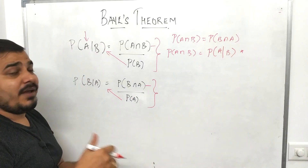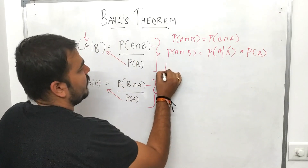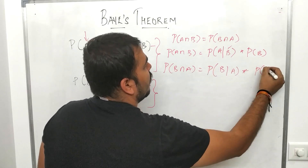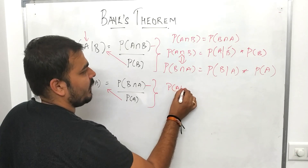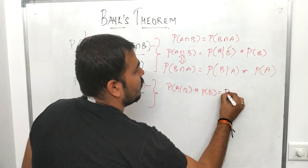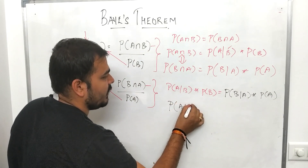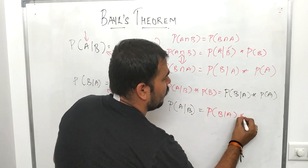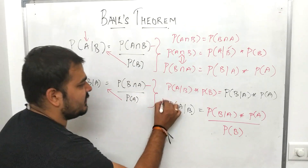Moving the denominators to the other side, we get: P(A intersection B) equals P(A|B) multiplied by P(B), and also equals P(B|A) multiplied by P(A). Equating both sides: P(A|B) times P(B) equals P(B|A) times P(A). Therefore, P(A|B) equals P(B|A) multiplied by P(A) divided by P(B). This is exactly the Bayes theorem.